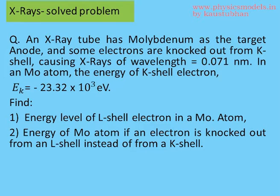We take an x-ray tube with molybdenum as the target. Electrons shot from the cathode generate x-rays from the molybdenum anode with a wavelength of 0.071 nanometers.